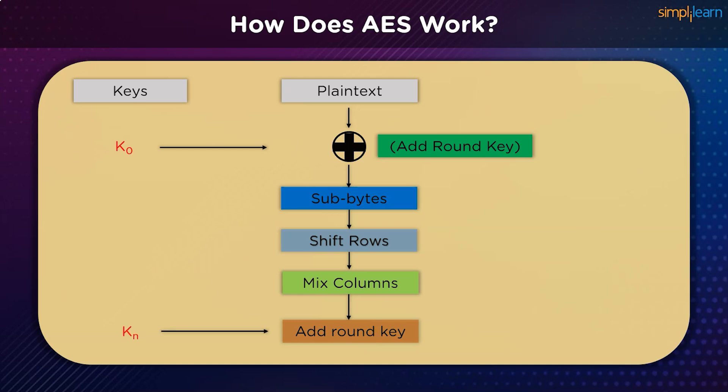These last four steps — byte substitution, row shifting, mix columns, and add round key — are part of every single round that the encryption algorithm goes through. The state arrays are passed from one round to the next as input. In the last round, however, we skip the mix columns portion, with the rest of the process remaining unchanged.